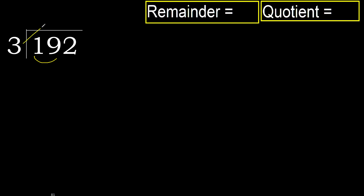therefore with 19, 3 multiplied by which number is nearest to 19 but not greater? 3 multiplied by 7 is 21 — 21 is greater. Multiplied by 6: 18 is not greater. Ok, subtract.